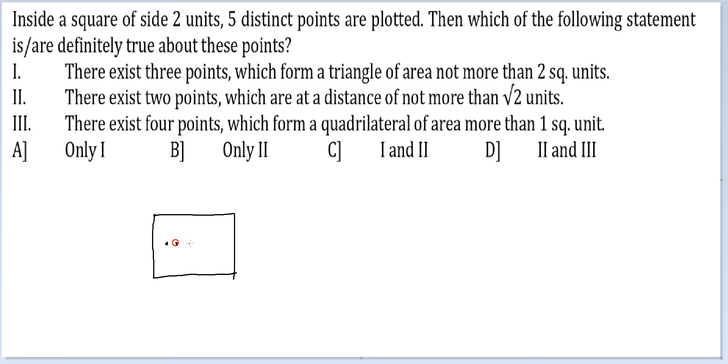What if I took all those 5 points in a straight line? It is impossible that it will form a triangle at all. Which means, this statement is not necessarily true.